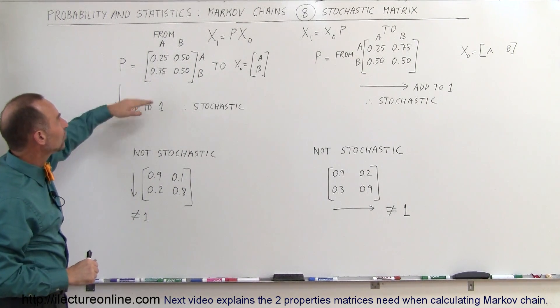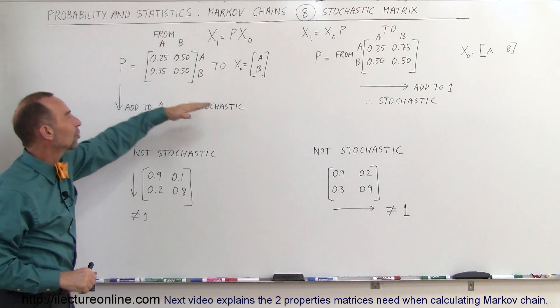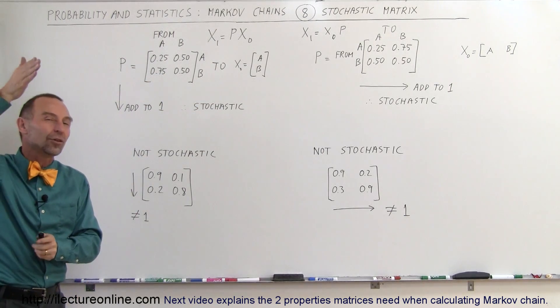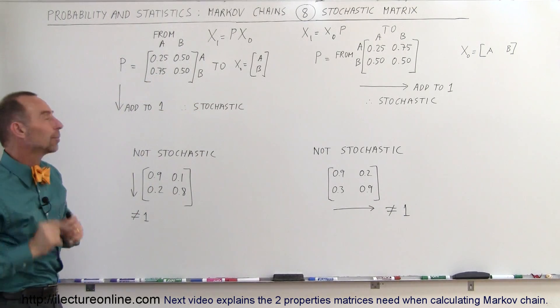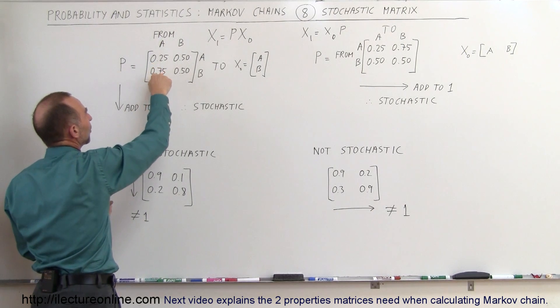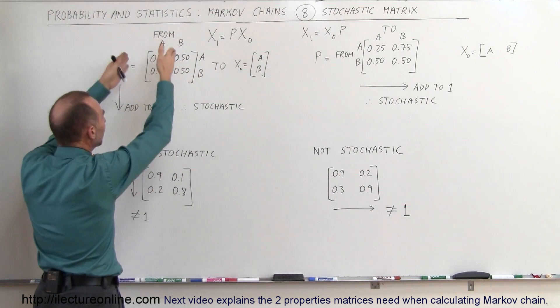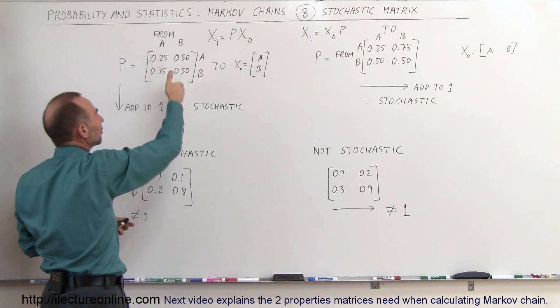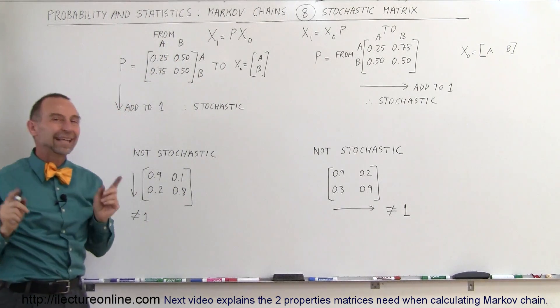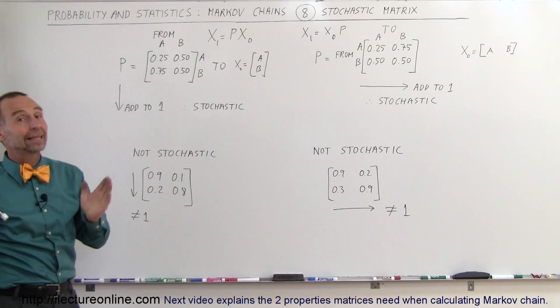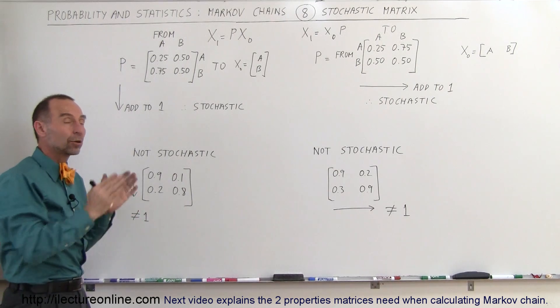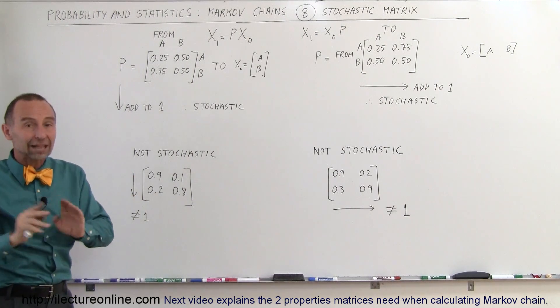Then you can see the matrix, the probability matrix is stochastic if all the numbers, all the elements in a vertical direction add up to 1. So 0.25 plus 0.75 add up to 1, 0.5 plus 0.5 add up to 1. So if we go in a vertical direction and the element values add up to 1 then the matrix is stochastic and that is important. You cannot do Markov chains if the matrices are not stochastic.